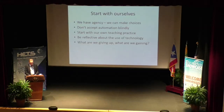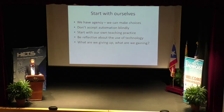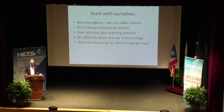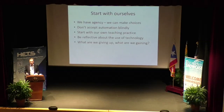When we think about what possibilities artificial intelligence computing has, we have to think about ourselves. We have agency and can make choices. We shouldn't be accepting automation blindly. We should start with our own teaching practices and be reflective about what we're doing. We should ask ourselves: what are we giving up and what are we gaining through the use of technology?